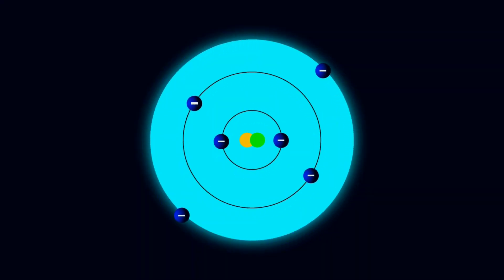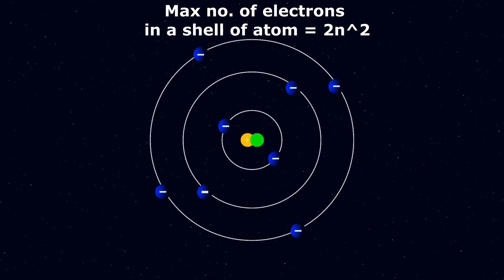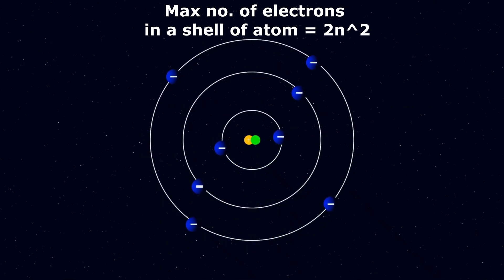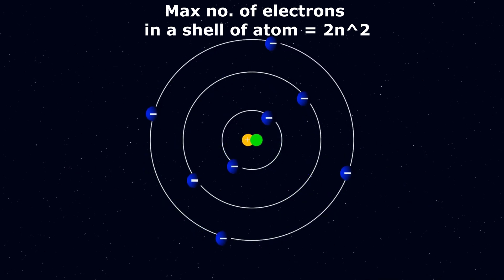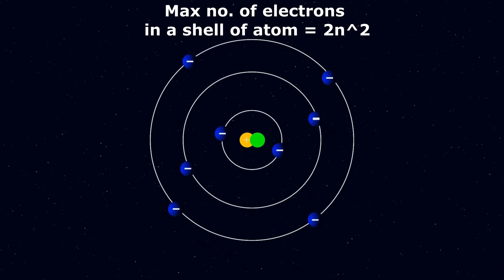As we know, electrons revolve around the nucleus of the atom in different energy states or shells. The maximum number of electrons that an orbit or shell of an atom can have can be calculated by the formula 2n². Here, n is the energy level.